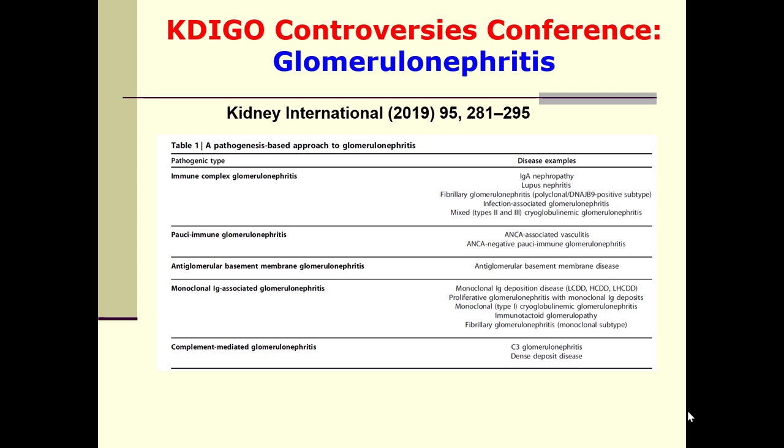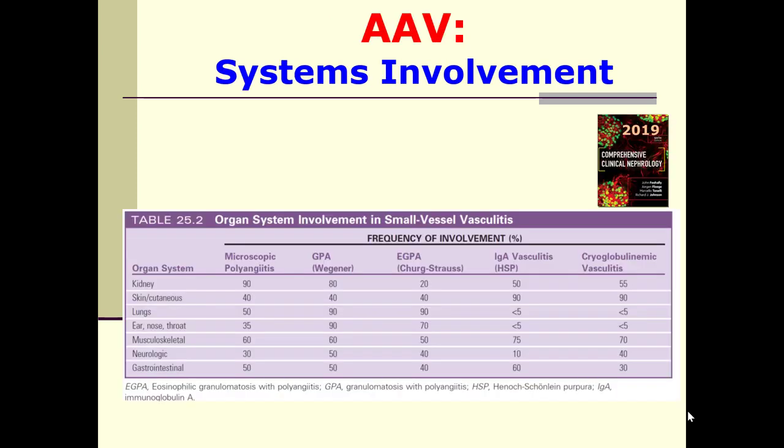According to the KDIGO Controversies Conference released in the February issue of Kidney International this year, pauci-immune glomerulonephritis is one pathological type of glomerulonephritis — either ANCA-associated vasculitis or ANCA-negative pauci-immune glomerulonephritis. For each type of small vessel vasculitis, there is a predilection for certain organs. For example, microscopic polyangiitis affects the kidney more commonly, while granulomatosis with polyangiitis affects the lung, upper respiratory tract, and kidney as well.